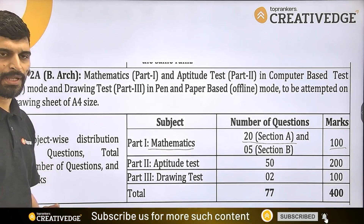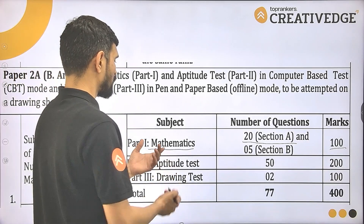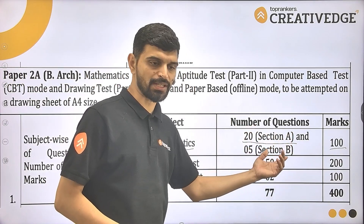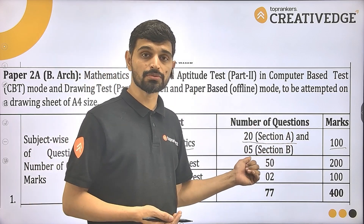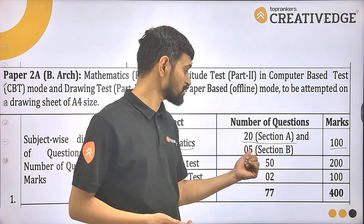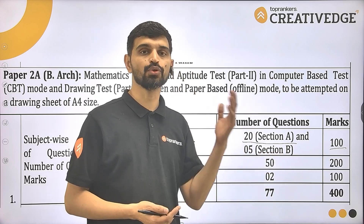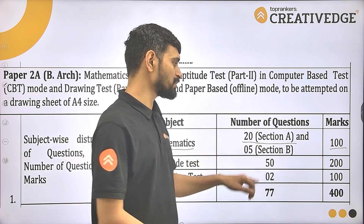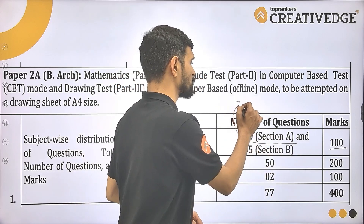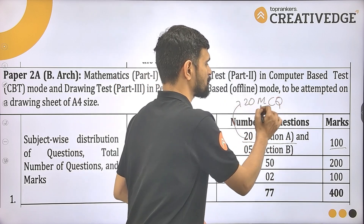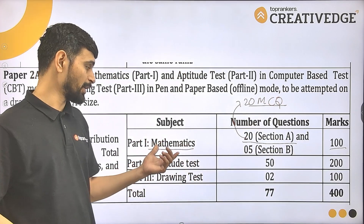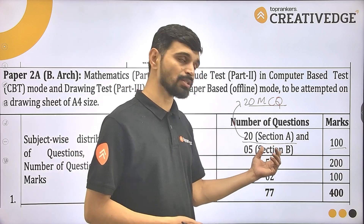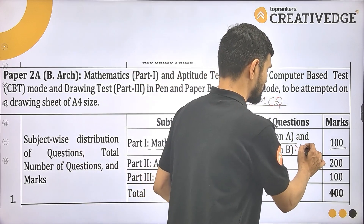Let's talk about the structure of the exam. In the Mathematics section there are 20 questions in Section A and 5 questions in Section B. This is a new update — till last year there were 10 questions in Section B out of which you had to attempt 5, but this time there is no internal choice. Section A has 20 multiple choice questions covering higher mathematics — Class 11th and 12th — and Section B has 5 numerical answer type questions.